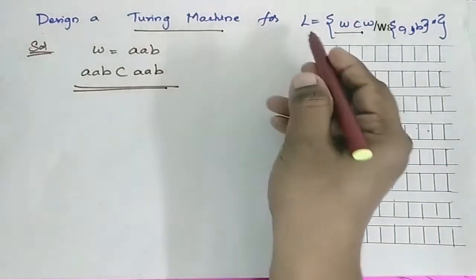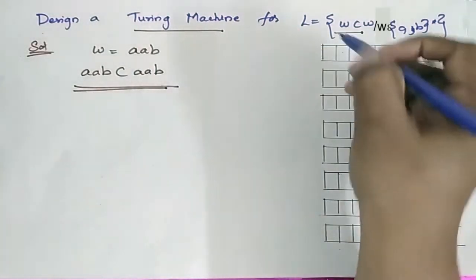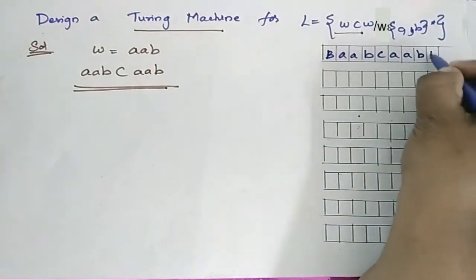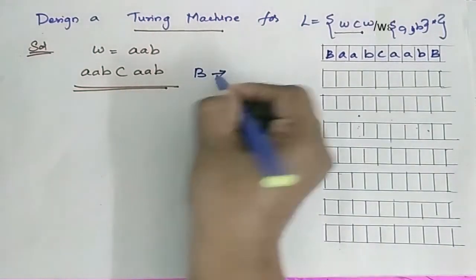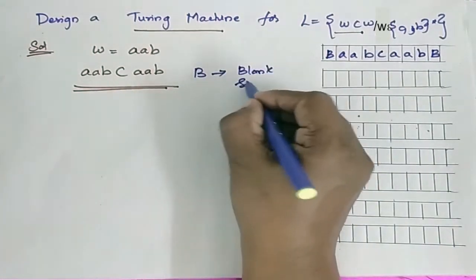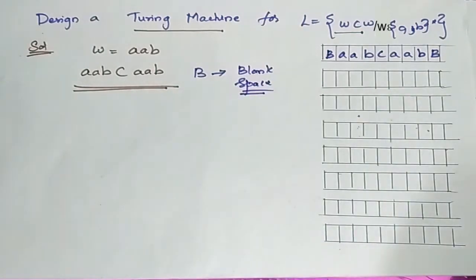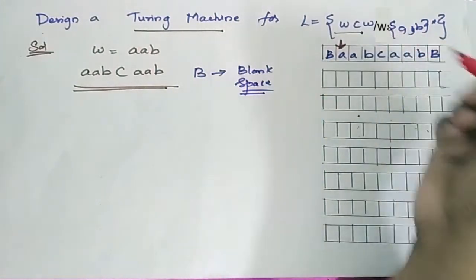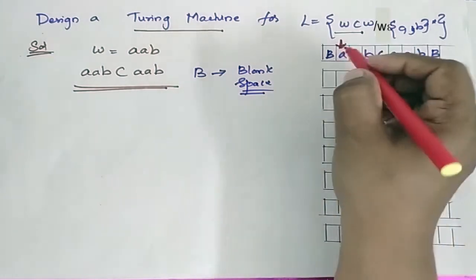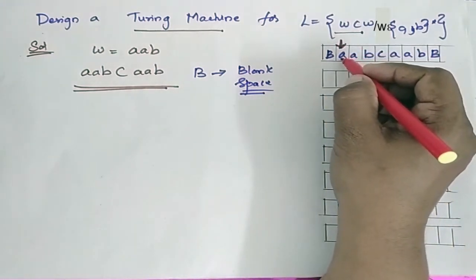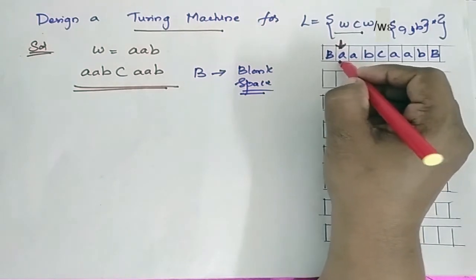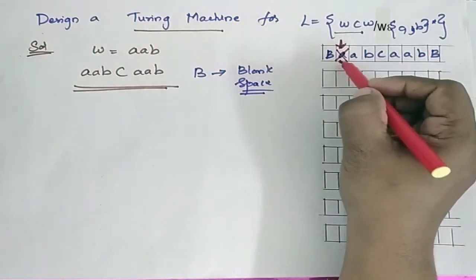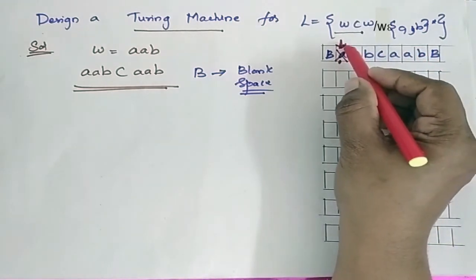Now let us see how it works. In the tape I have the string AABCAAB. B represents the blank space present in the tape. In the beginning the tape header is positioned at the start. When the tape header encounters an A, this A is replaced by X.